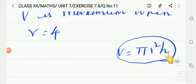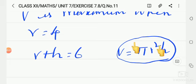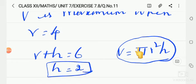Now for height, obtain h's value. Already in the question what was given? r plus h is equal to 6 was given. Substitute r as 4. H is equal to 6 minus 4. So h's value comes out to be 2.